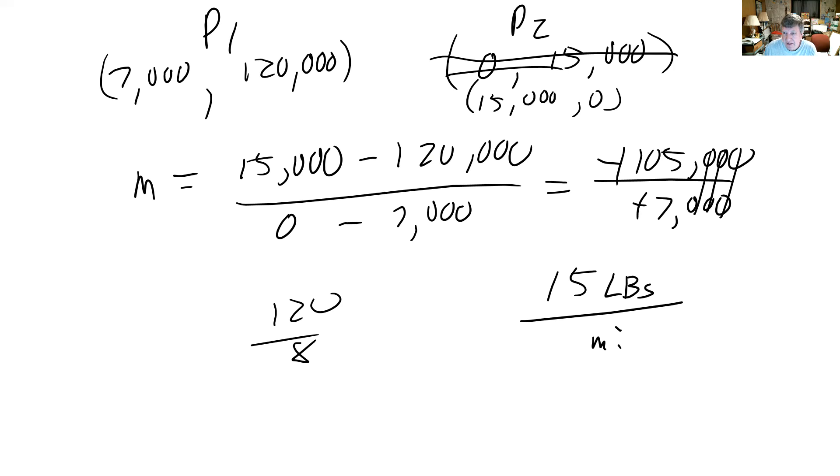That changes everything. So let's go back and look at this again. Point 1 would be (7,000, 120,000).